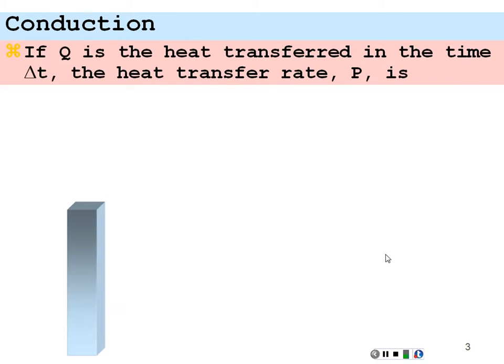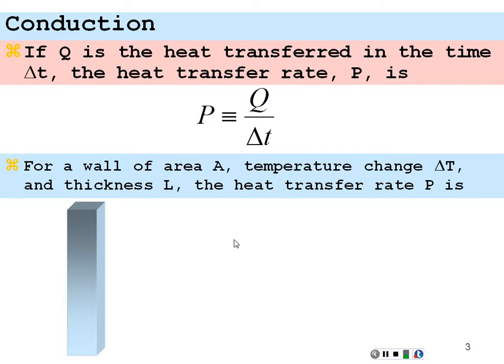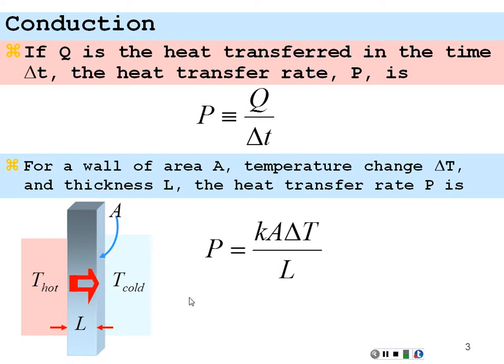Conduction: if Q is the heat transfer and we do it in a time delta T, we can think about power. Power is energy per time. In this case, it would be the heat transferred per time. If we consider a wall with an area of A, a temperature change between the two sides of the wall of delta T, and a thickness L, then the heat transfer rate through this wall is equal to K times A times delta T over L. And that would be the power transferred, KAT over L.